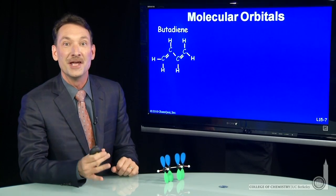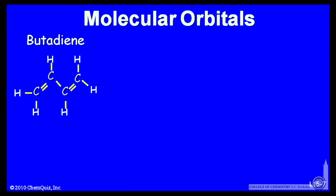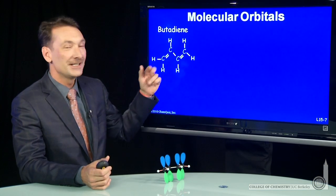Let's look at the molecular orbitals in the bonding in butadiene. Butadiene, shown here, has four carbons—one, two, three, four—five, six hydrogens, and you'll notice alternating double bonds.